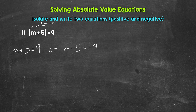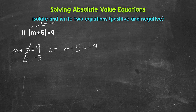Let's start with m plus 5 equals 9, so we need to isolate that variable m. We are adding 5 to m, so we need to undo that. The inverse operation of addition is subtraction. So let's subtract 5 from the left side of the equation. Whatever we do to one side, we must do to the other, so subtract 5 from the right side as well. The 5s cancel each other out. m is now isolated, so m equals 9 minus 5, which gives us 4. So m equals 4.